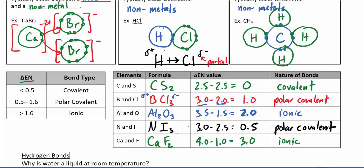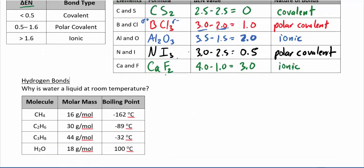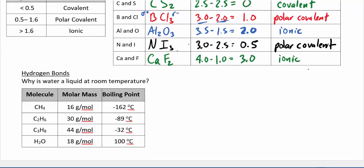Now briefly, let's talk about why the type of bond matters and how it dictates how a chemical behaves. Consider water — water is really weird for a bunch of reasons. It is the molecule of life and any life we know of needs water to function. One reason water is weird is that it's a liquid at room temperature. That might not seem strange, but consider: water is a pretty small molecule at just 18 grams per mole, yet you have to get it to 100°C to boil it into a gas.